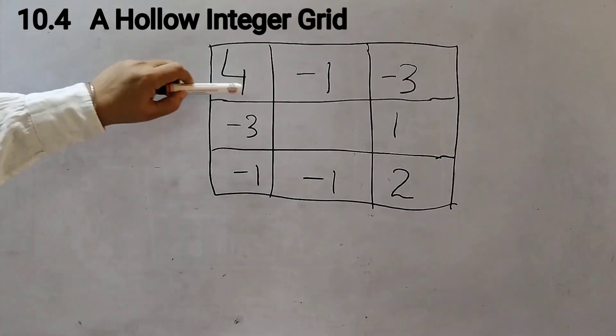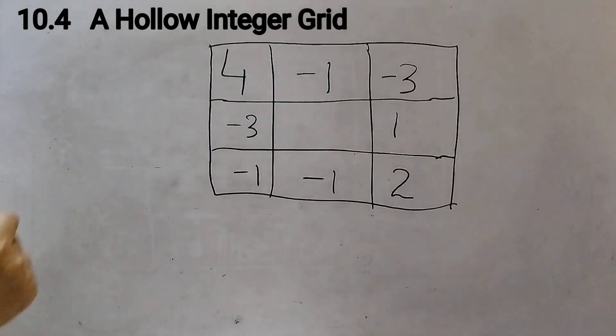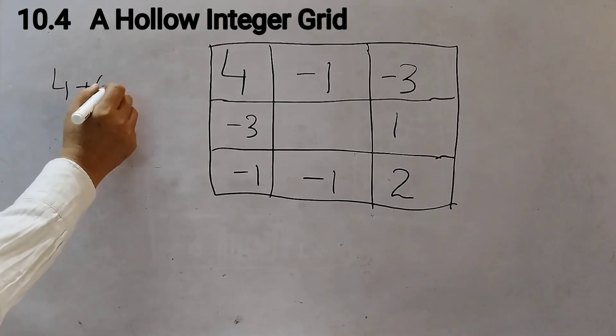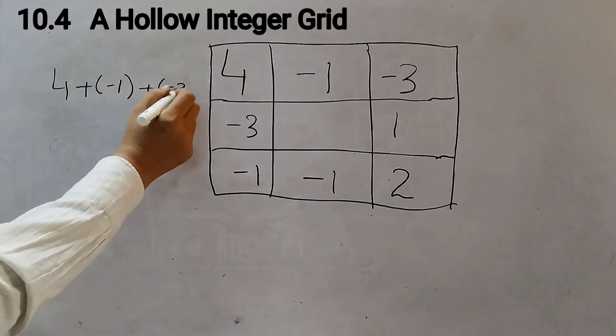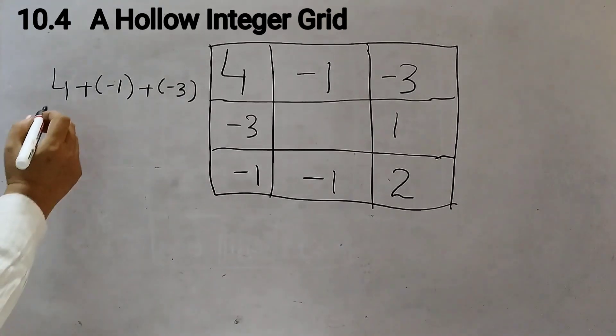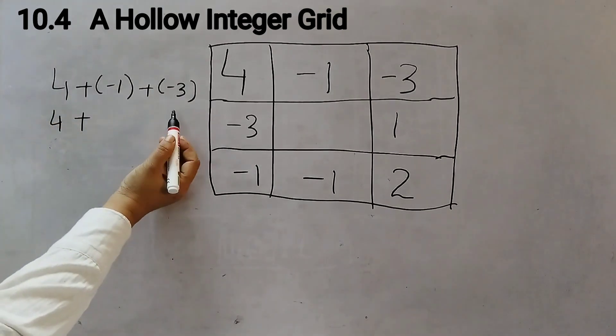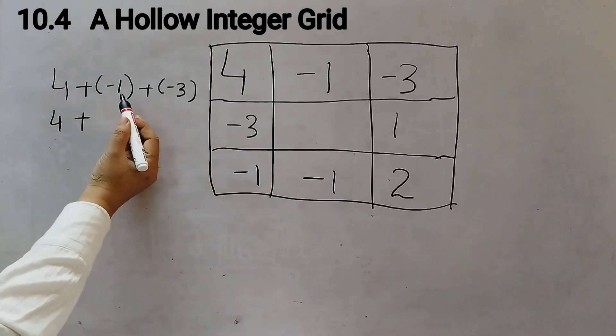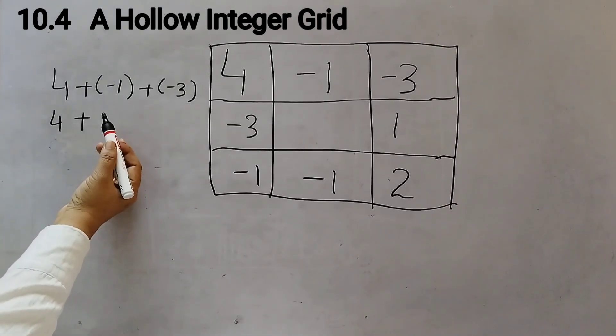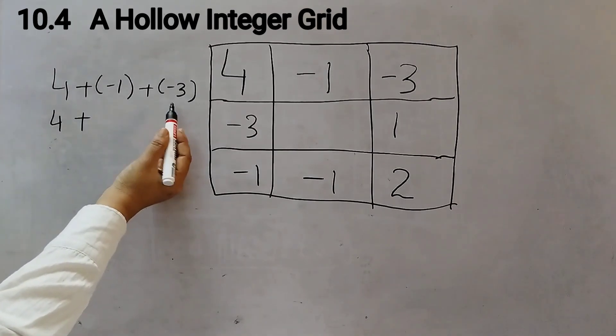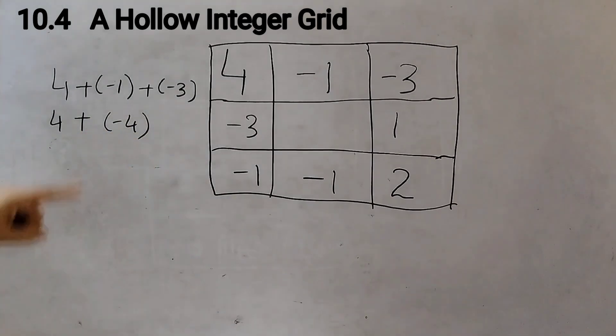If I take the first row, 4 minus 1 minus 3, that's 4 plus (-1) plus (-3). Add all these numbers. How do we add 4 plus these two minus numbers, negative numbers? We will add up the numbers and keep the minus sign. 1 plus 3 is 4, so it's minus 4. 4 plus minus 4 is equal to 0. So when I add up all the three numbers, I get a 0.